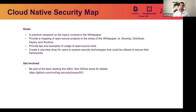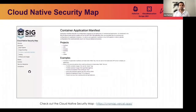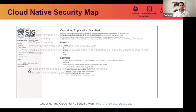The map also provides examples of how these tools can be utilized in a particular category, thereby providing users a one-stop shop to explore available technologies and how they can be leveraged in their frameworks. If you want to be part of the team leading this effort, check out issue 551 in the SIG Security repo.